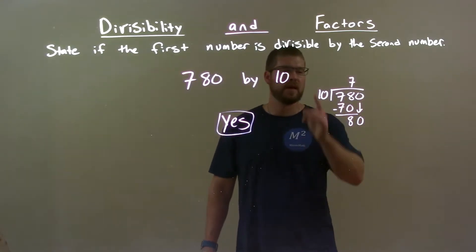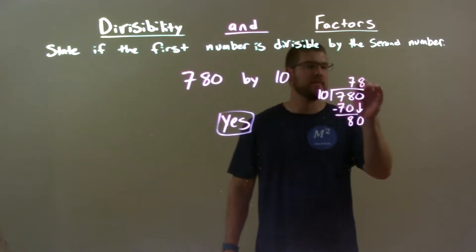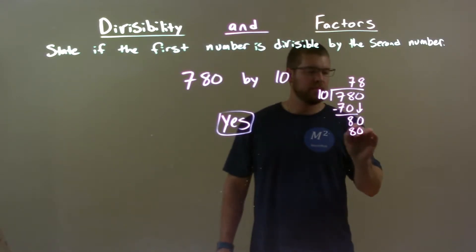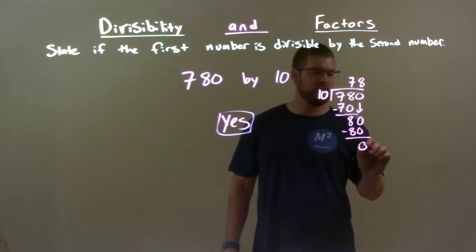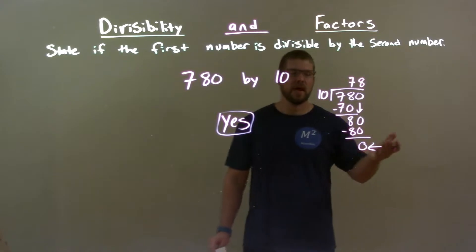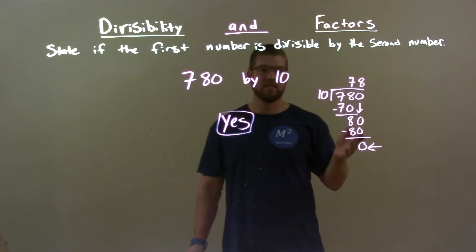Bring down the 0. Now, does 10 go into 80 evenly? Yeah, 8 times. 8 times 10 is 80. Subtract the 2 there, we get a 0. And that remainder of 0 tells us that yes, 10 goes into 780 evenly.